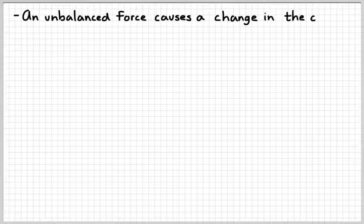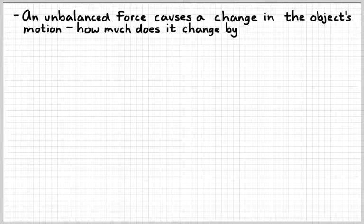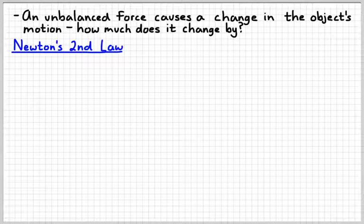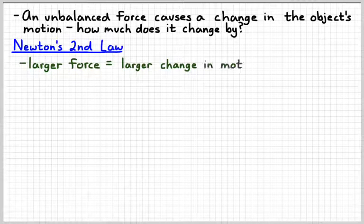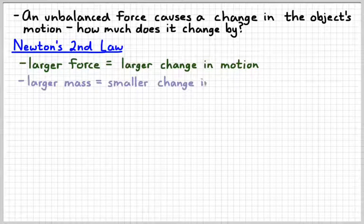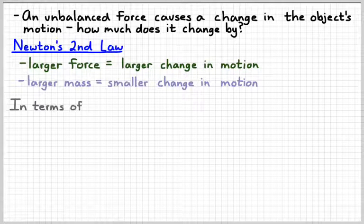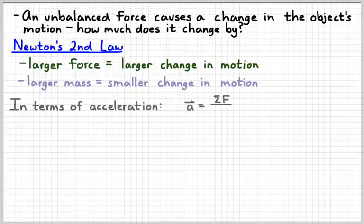So the next thing we want to do is figure out how big a motion change we're going to have. An unbalanced force causes a change in an object's motion — but how much does it change by? We have a really important rule for that, usually called Newton's second law. The larger the force on an object, the larger its change in motion. And the larger the object's mass, the smaller its change in motion. We can write this mathematically: if we write it in terms of acceleration, the rule is acceleration equals net force divided by mass.